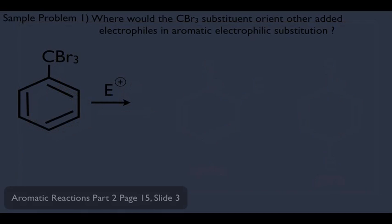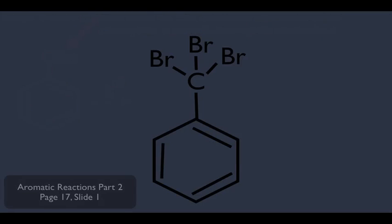Let's say again you're on your orgo test, and you're asked to predict the product of this reaction. We're adding an electrophile to this molecule, and look at this substituent, it's CBr3. And this substituent happens to not be on your list. So think about it, if we don't know what directing ability it has, we can't make a quick product analysis here. What we should do is quickly evaluate this substituent.